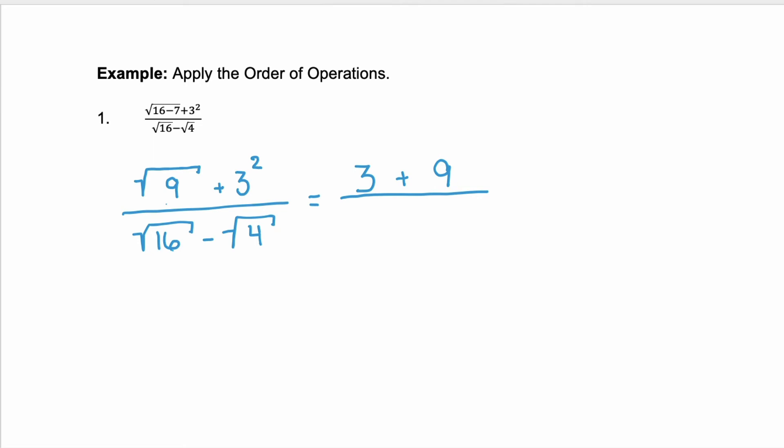The square root of 16. So what number times itself is 16? That's four minus the square root of four. We've done that a couple of times today. That would be two. And now our last step is going to be adding and subtracting from left to right. So three plus nine in the numerator, which is 12. And four minus two in the denominator, which is two. And we can actually simplify 12 over two, which is six.